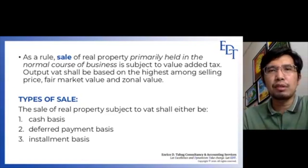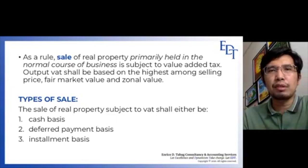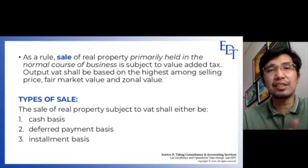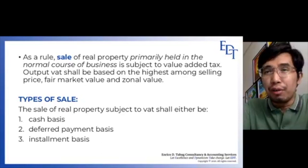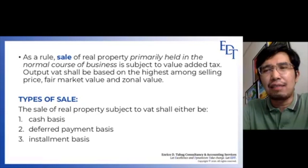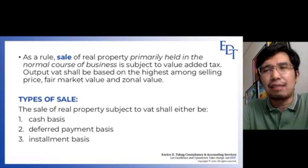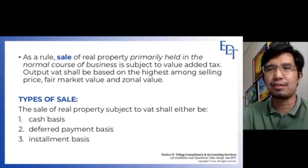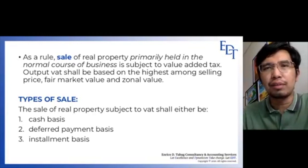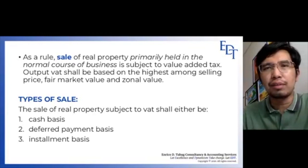Aside from knowing the basis of the 12% VAT on sale of real property, we will discuss the different types of sales for VAT purposes. Under the Tax Code there are three: cash basis, deferred payment basis, and installment basis. If we are the seller on a cash basis, we will be paid in full right away. The significance of classifying the sale is that it determines how much of the output VAT shall we report to the BIR. On a cash sale, since you are fully paid, we need to report the entire output VAT right away during the month or quarter the sale was made.